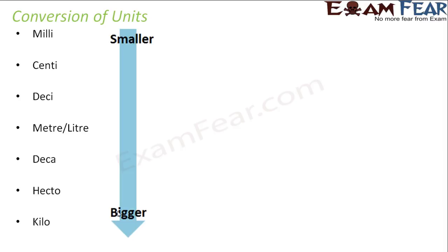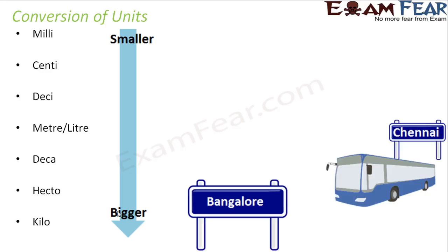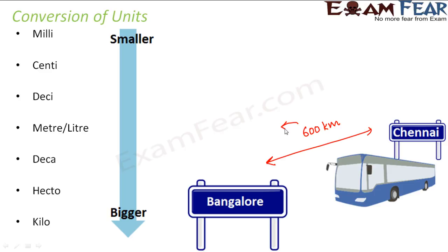Bigger distances, like the distance between two cities, are always measured in kilometers. So if you ask how far is Bangalore from Chennai, it would be around 600 kilometers. Now if you want to describe it in meters, then this 6 will carry five zeros with it — that is 6 lakh meters — because the unit is becoming smaller, so the value would be more.